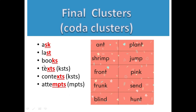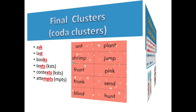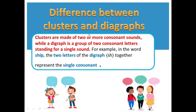The concept of initial and final clusters should now be clear. What is the difference between clusters and digraphs? Clusters are made of two or more consonant sounds where each consonant gives its separate sound. A digraph is a group of two consonant letters standing for a single sound. For example, in 'ship', S-H together represent one sound — /sh/. The sound of S is /s/ and H is /h/, but combined they become the single /sh/ sound. That is the difference between clusters and digraphs.